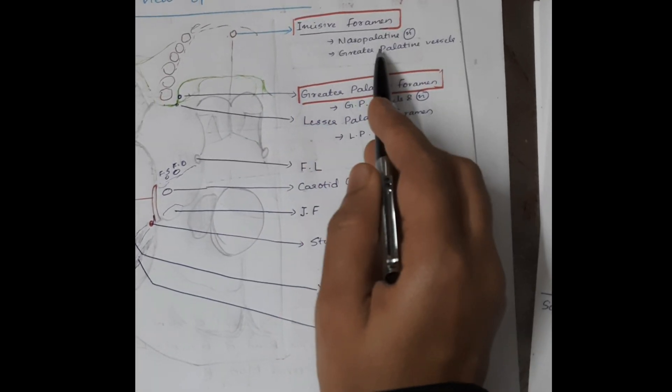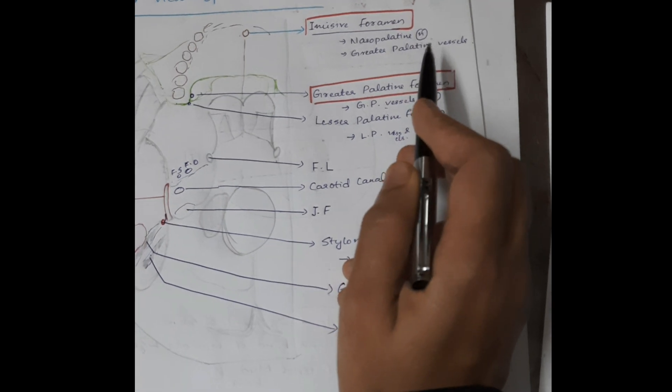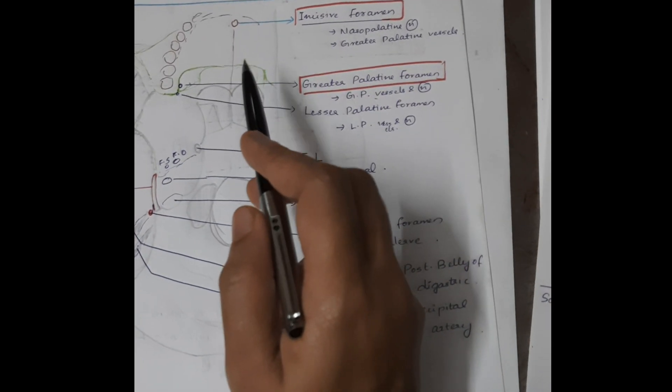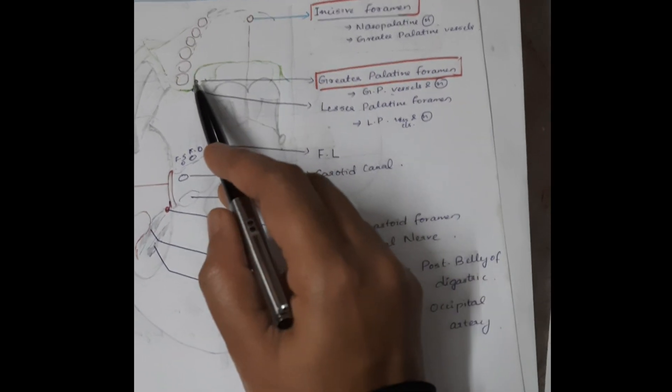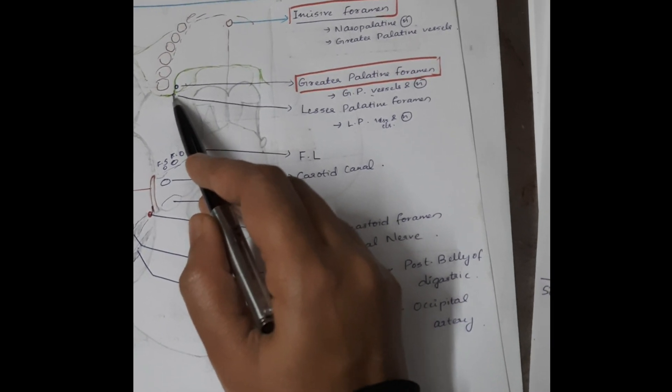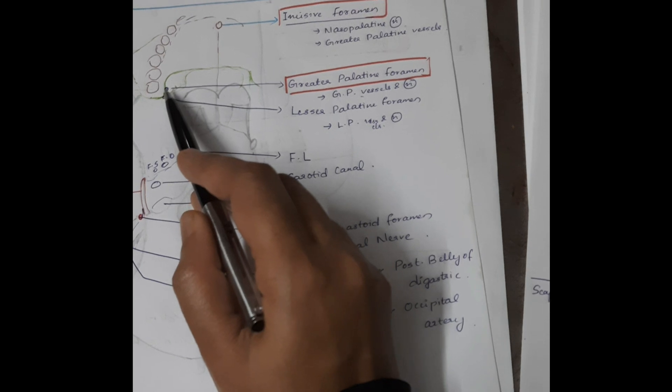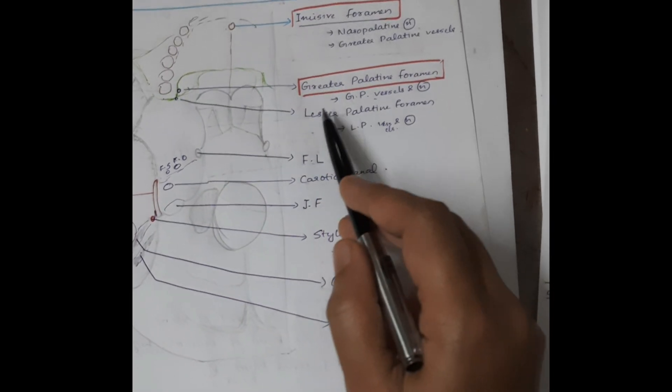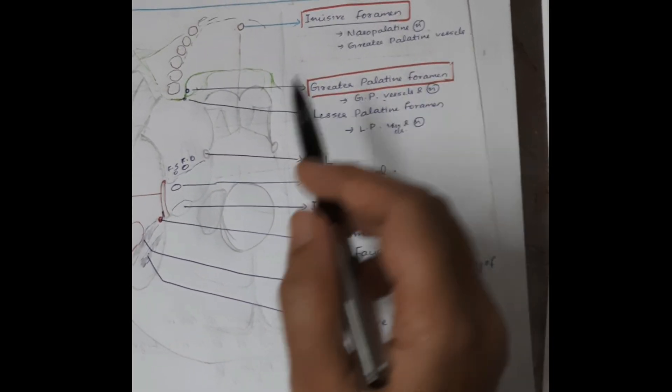Next foramen you should know is the greater palatine foramen and lesser palatine foramen. Through the greater palatine foramen, greater palatine vessels and nerves pass through. Through the lesser palatine foramen, lesser palatine vessels and nerves pass.